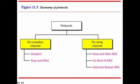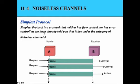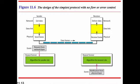The simplest protocol is used for noiseless channels and has neither flow control nor error control. In this protocol, the sender transmits frames one after another and they arrive at the receiver without any error or frame loss. Frames are sent continuously and received without issue, illustrating the simplest protocol design.